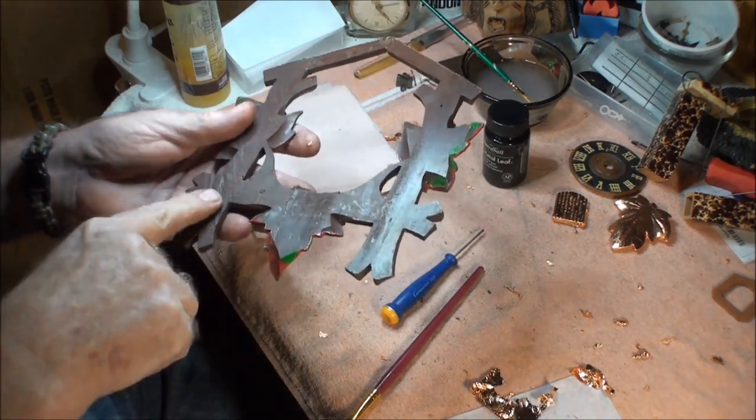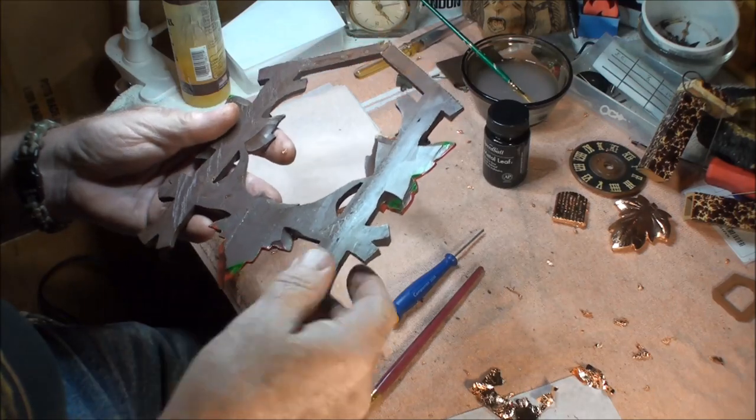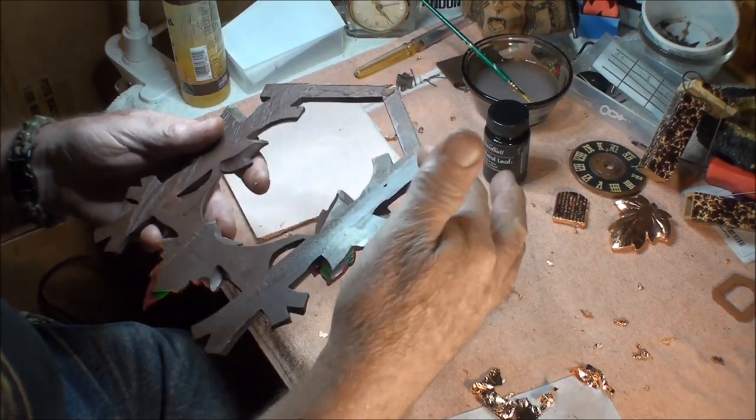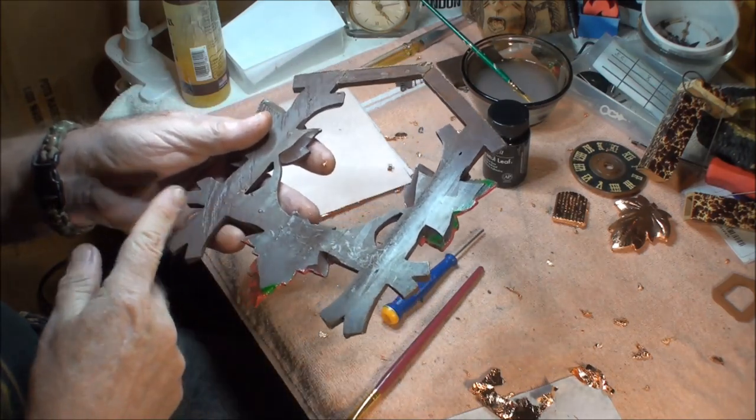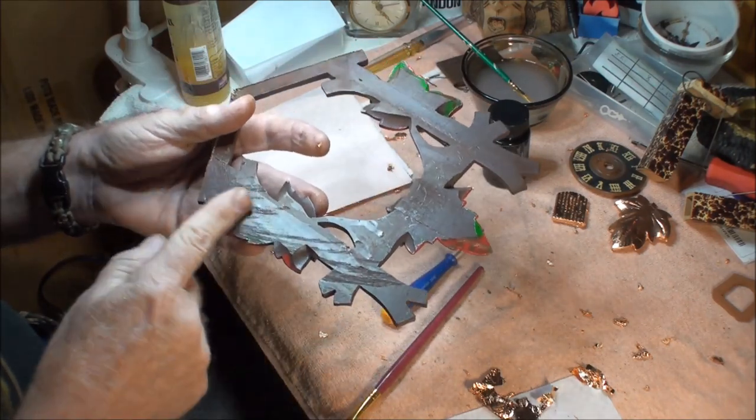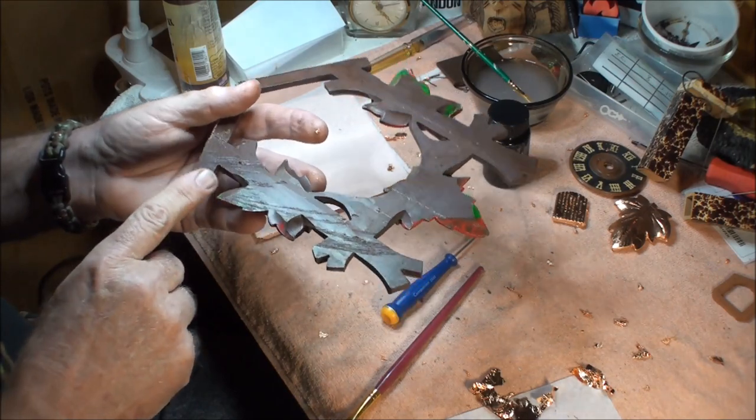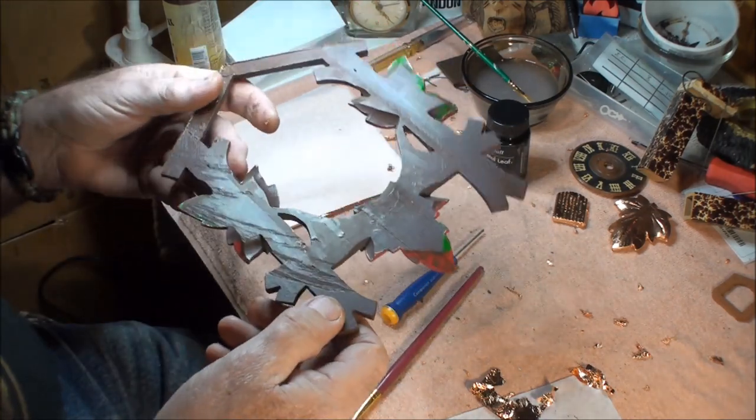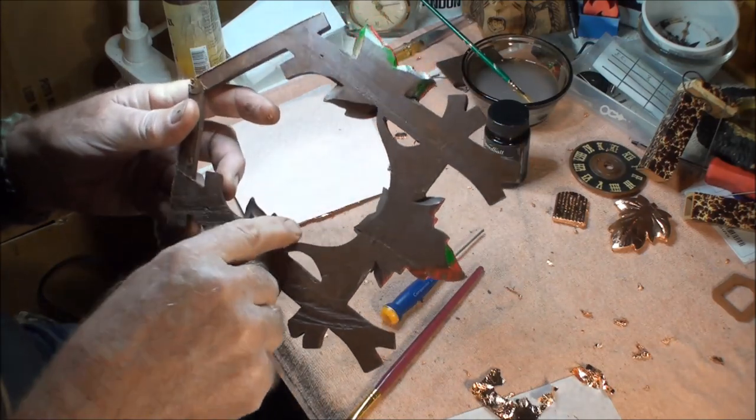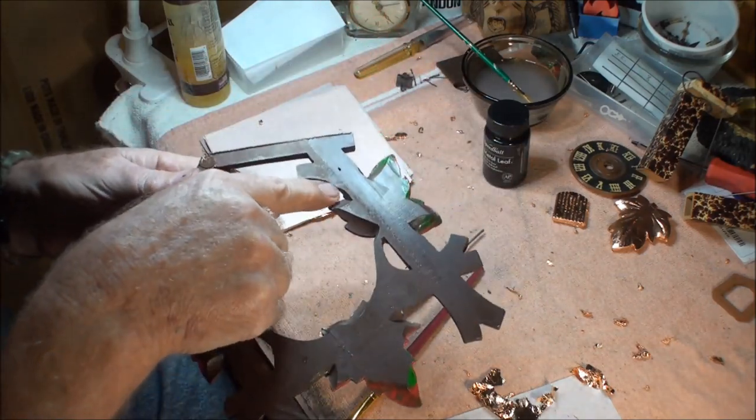I'm going to do the back side first. The only thing I'm going to worry about is the parts that actually show once this is on the box. So that means it will be just this area here, this area here, and this area here, and of course I'll get the leaves that I can on the back side too that have the deeper grooves.